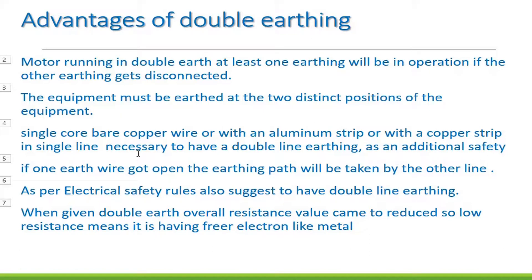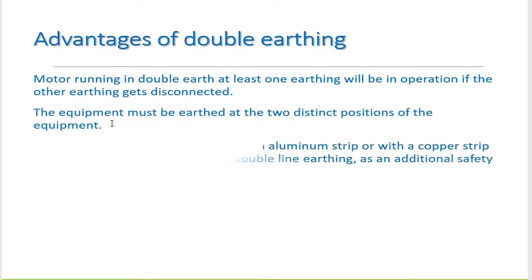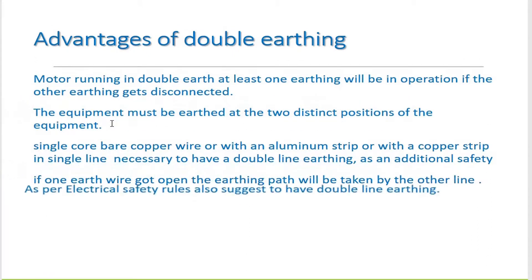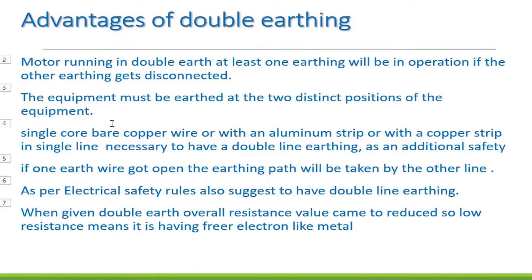We use cables such as single-core copper or aluminum for earthing. If only a single earth wire is used, it can get cut and leave the equipment unprotected. With double earthing, if one earth wire opens, we still have another line providing protection. As per electrical safety rules, double earthing is mandatory. It must be connected for induction motors and all other equipment.